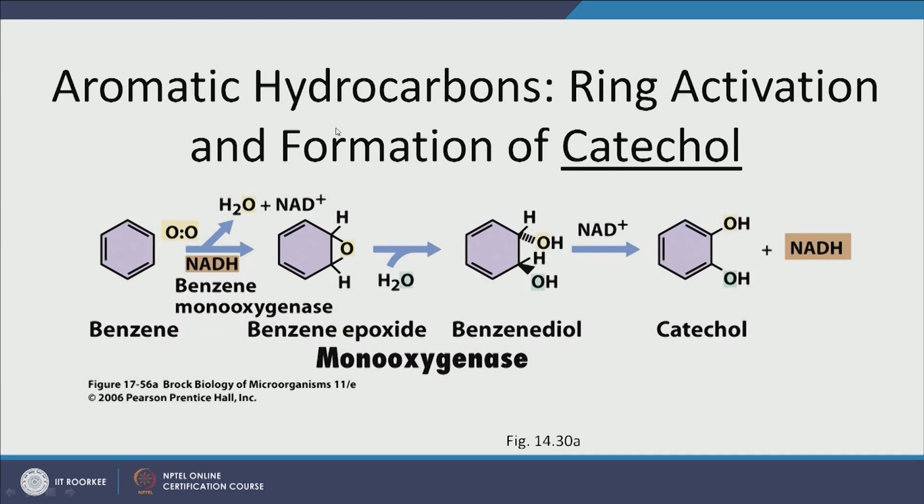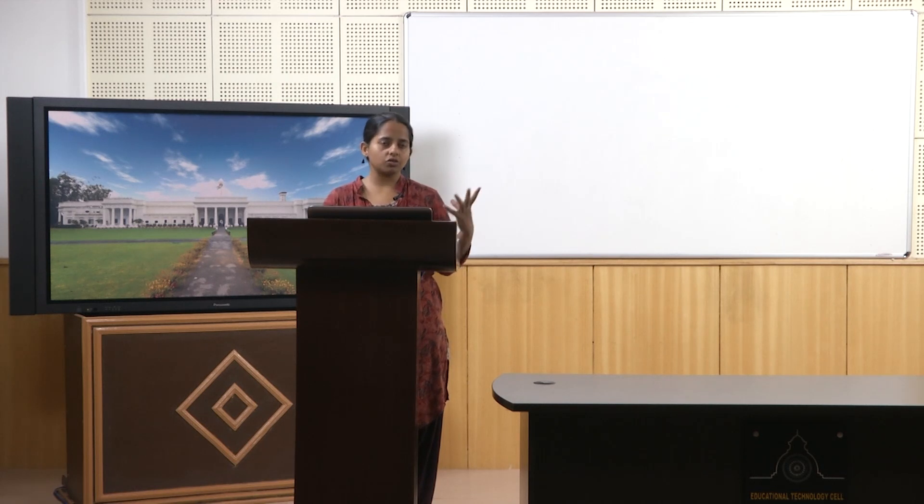Now let us look at aromatic hydrocarbons. Aromatic hydrocarbons are extremely stable, which makes them very difficult to degrade because the energy barrier for degrading them is very high. There are certain enzymes that specialize in degradation of aromatic hydrocarbons, and many times the process goes through the catechol pathway — it makes catechol, which is easier to degrade compared to an aromatic compound such as benzene.